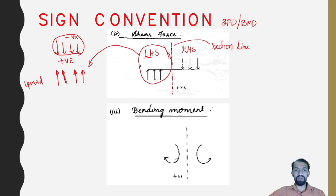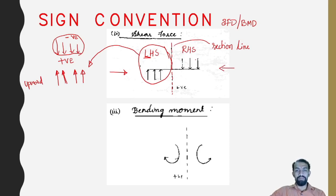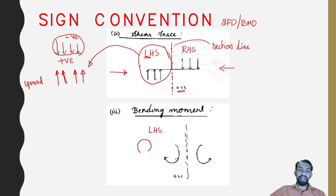If we move to the right-hand side, downward forces are considered positive, and upward forces are negative. For the bending moment, using the same section line: on the left-hand side, rotation in the clockwise direction is always positive.